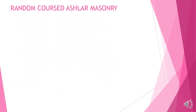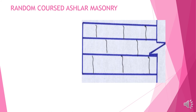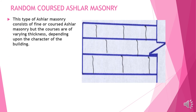Random course Aslar masonry: this type of Aslar masonry consists of fine or coarse Aslar masonry, but with courses of varying thicknesses depending upon the character of the building.